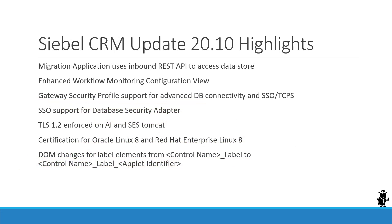We've covered quite a few highlights in the 20.10 update. To recap: the migration application now uses the inbound REST API instead of JDBC to access the data store. We have a new, enhanced Workflow Monitoring Configuration view to set monitoring levels and other attributes of workflow processes. We saw a demo of setting up the gateway security profile with advanced database connectivity, which supports SSO and includes support for protocols such as TCPS. We also saw how the database security adapter for object managers can now support SSO, and we saw the enforcement of TLS 1.2.